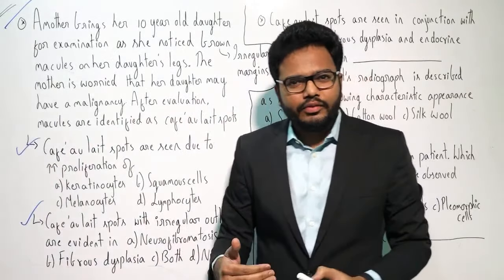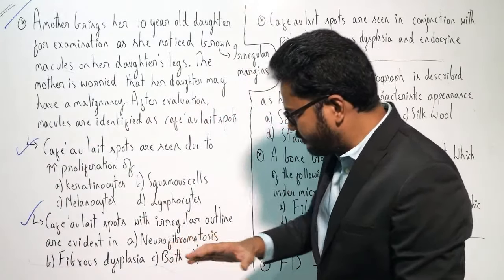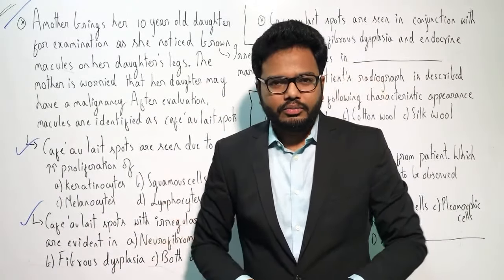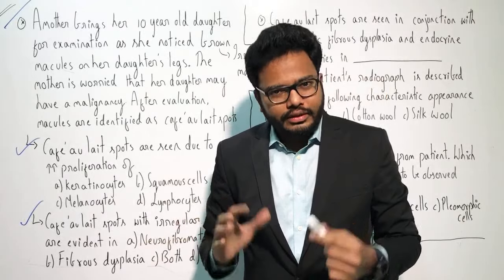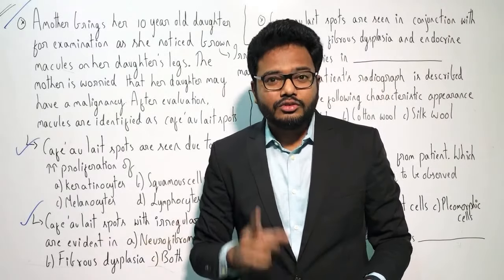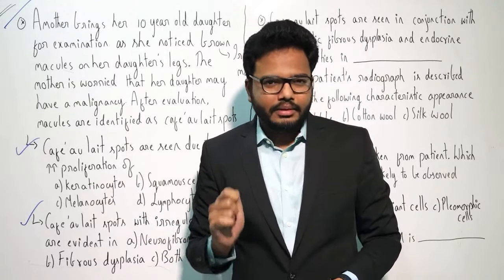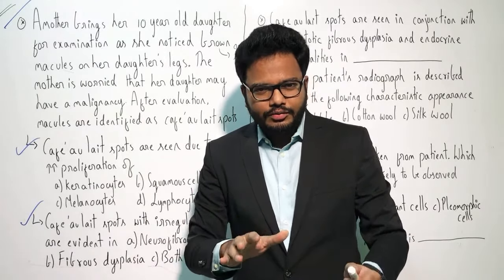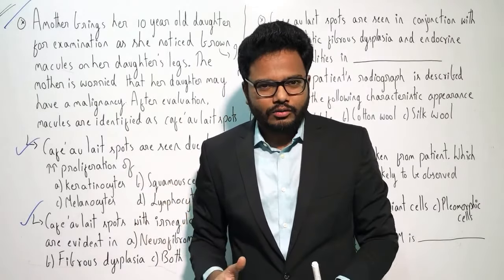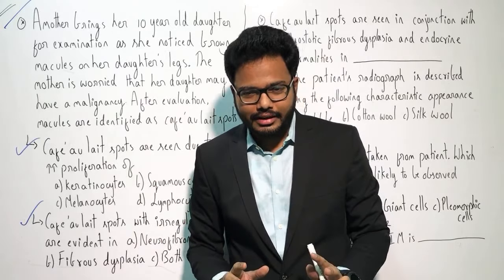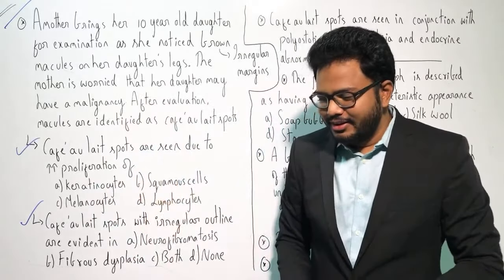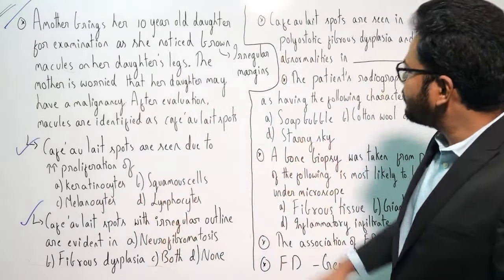There is another feature which helps us differentiate fibrous dysplasia from neurofibromatosis apart from the outline of café-au-lait spots: the prevalence of skin pigmentation on the ipsilateral side of bony lesions, which is true in the case of polyostotic fibrous dysplasia. Using these two features you can differentiate fibrous dysplasia from neurofibromatosis.